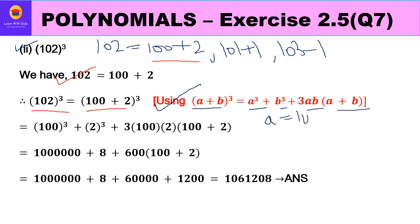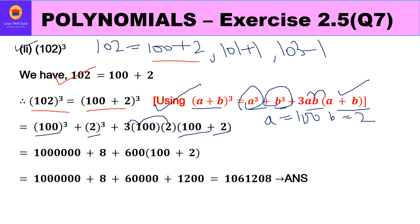Here a is 100 and b is 2. So we write: 100³ + 2³ + 3 × 100 × 2 × (100 + 2). Solving: 100³ = 1,000,000; 2³ = 8; 3 × 100 = 300, times 2 = 600; then 100 + 2 = 102. Opening the bracket and solving, the final answer for 102 cubed is 1,061,208.